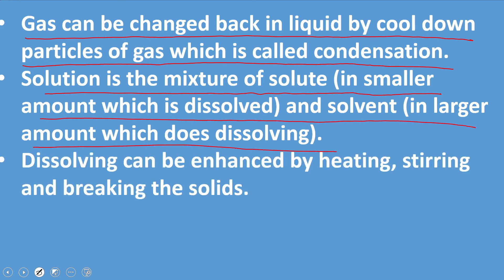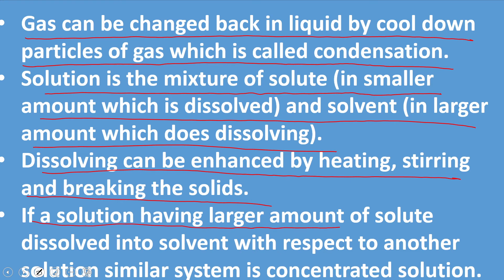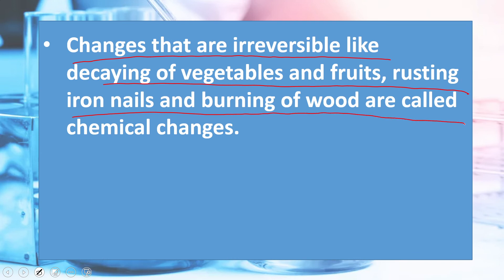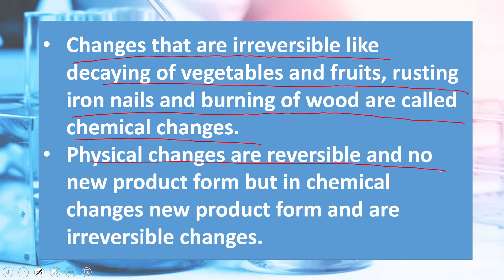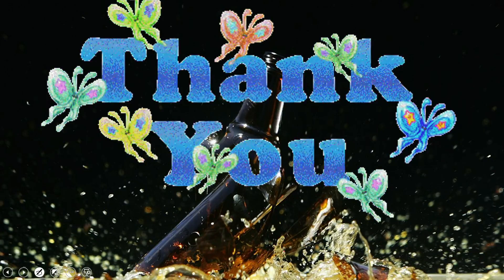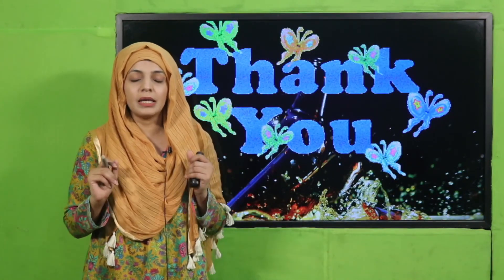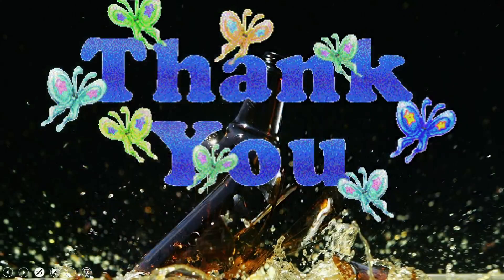Gas can be changed back to liquid by cooling down the particles of gas, which is called condensation. A solution is a mixture of solute in a smaller amount dissolved in a solvent in a larger amount. Dissolving can be enhanced by heating, stirring, and breaking the solids. A solution with a larger amount of solute compared to another solution is called a concentrated solution. Irreversible changes like decaying of vegetables and fruits, rusting of iron nails, and burning of wood are chemical changes. Physical changes are reversible and no new product is formed, but chemical changes form new products and are irreversible. Thank you so much and have a good day.